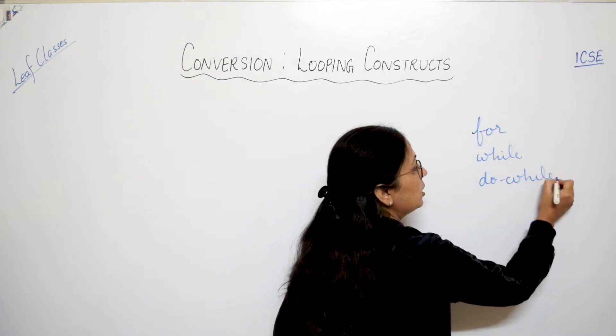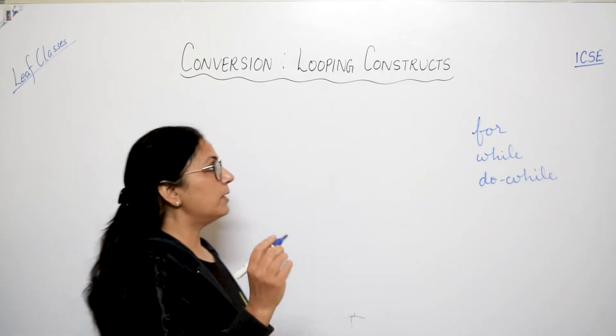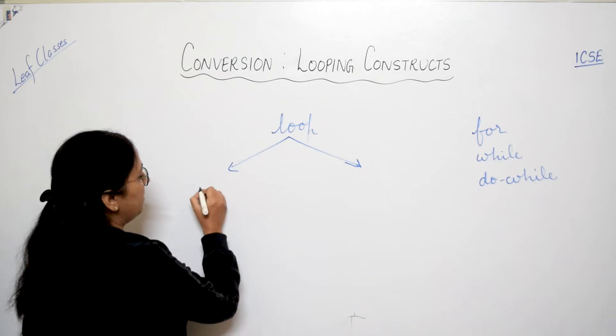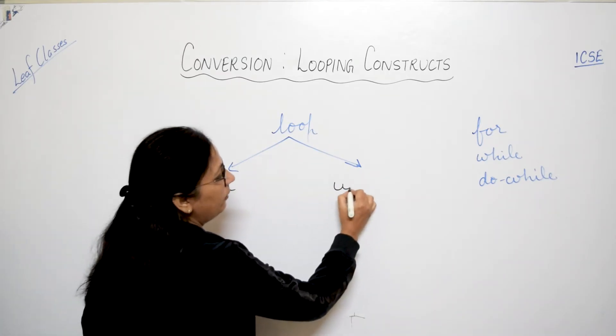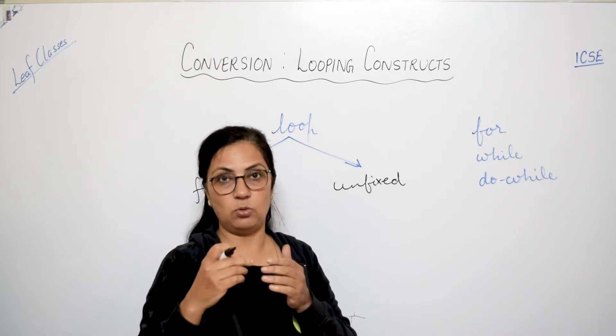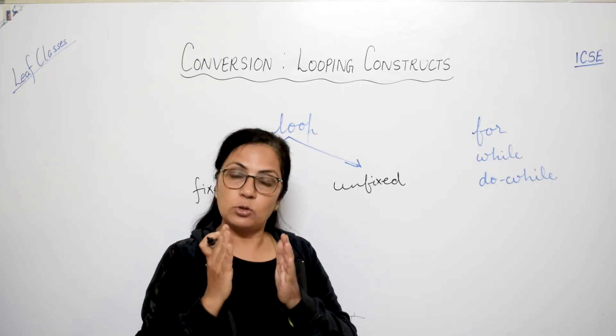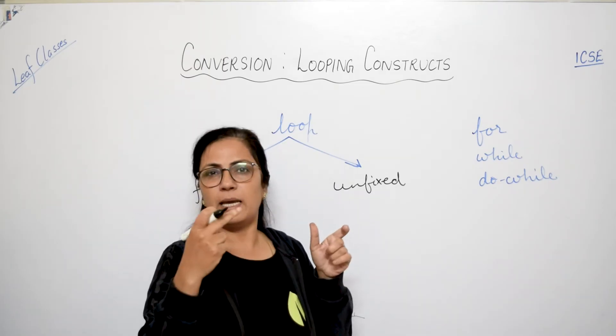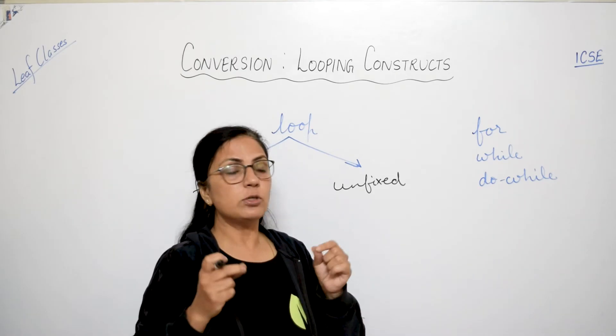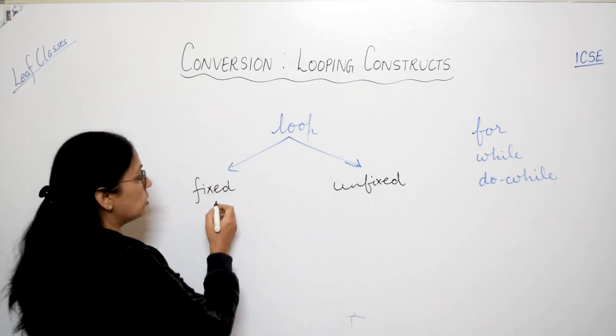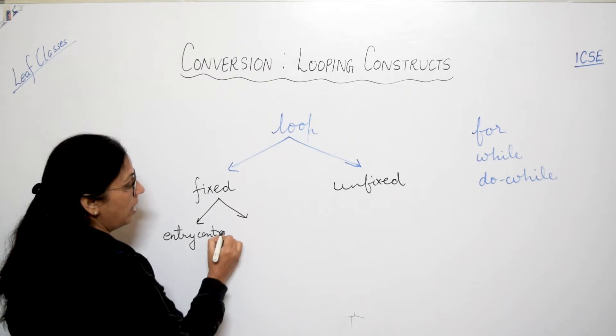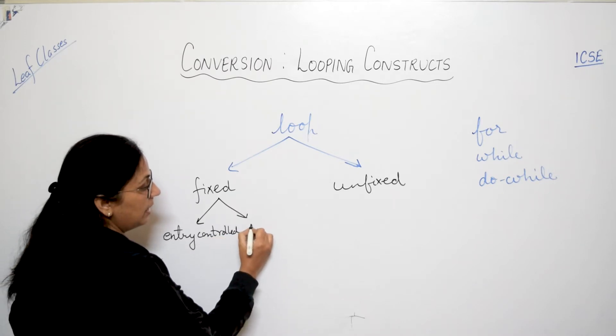Now these type of conversion questions are asked in exams. First let me tell you, when we categorize loop it can be categorized into two types: fixed number of iterations and unfixed number of iterations. What do you mean by fixed number?